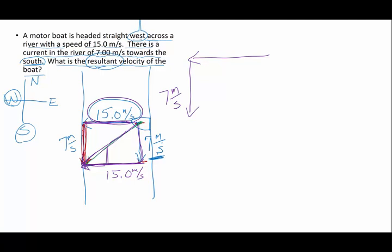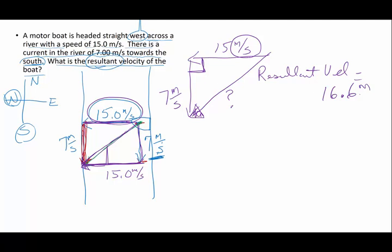I'm going to redraw this. 7 meters per second south, 15 meters per second towards the west. Here is my resultant velocity. Now this is a right angle here, how do I find the length of this? You bet, using Pythagorean's theorem. So I'm going to go 7 squared plus 15 squared equals square root. I get the resultant velocity is going to be, in this case, 16.6. And whatever units are on these also is on the resultant, 16.6 meters per second.